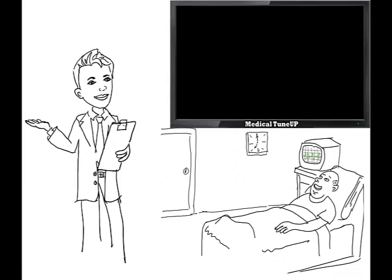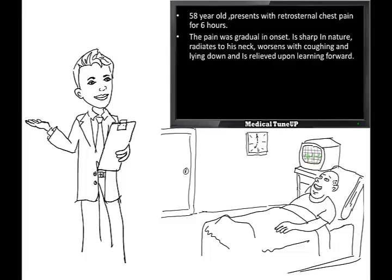Our patient Mr. Mukesh, 58 year old, presents with retrosternal chest pain for 6 hours. The pain was gradual in onset, sharp in nature, radiates to his neck, worsens with cough and lying down, and is relieved upon leaning forward. There is no associated nausea, diaphoresis, or dyspnea.